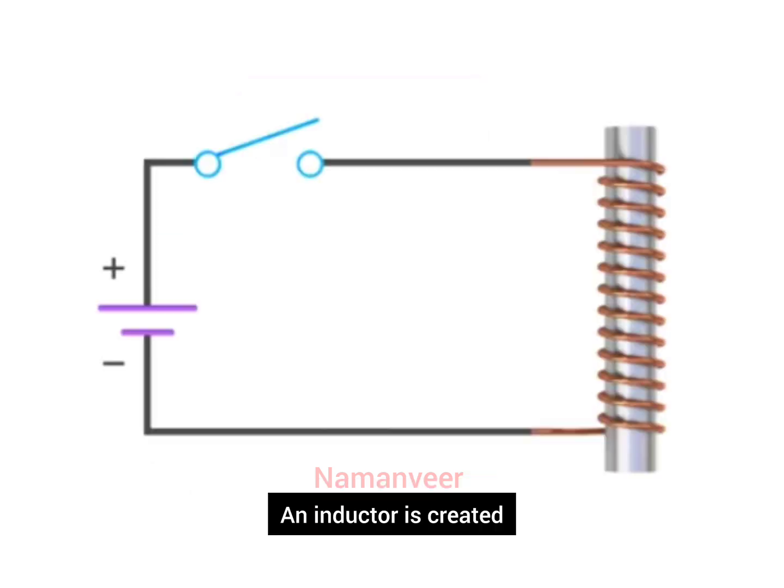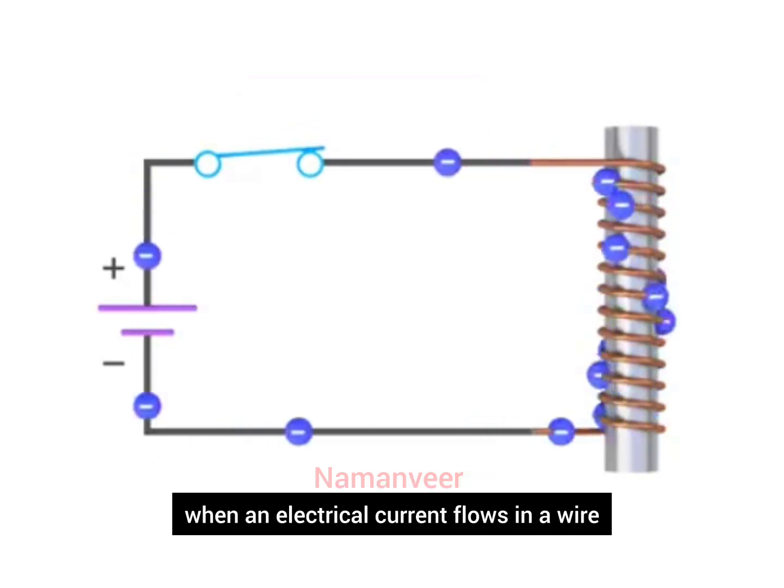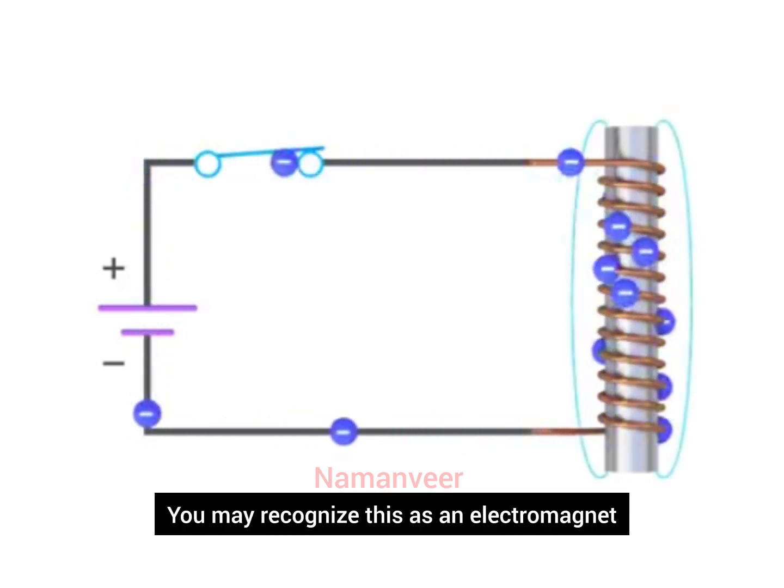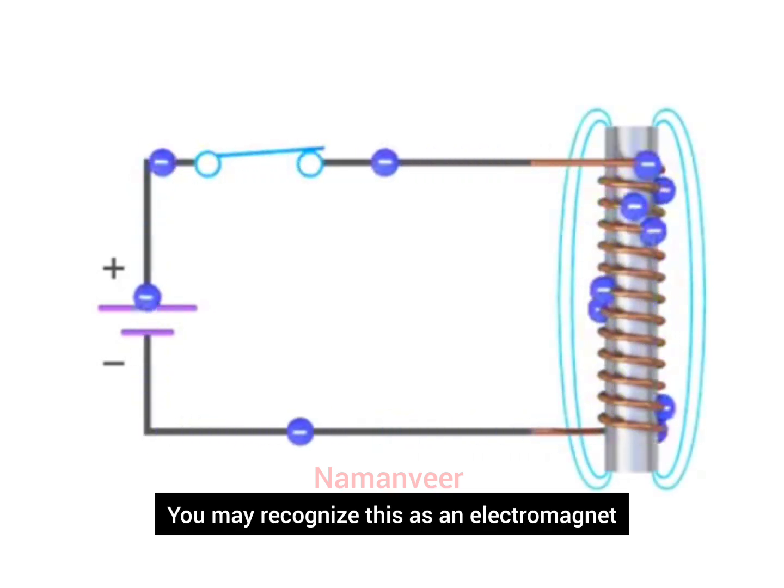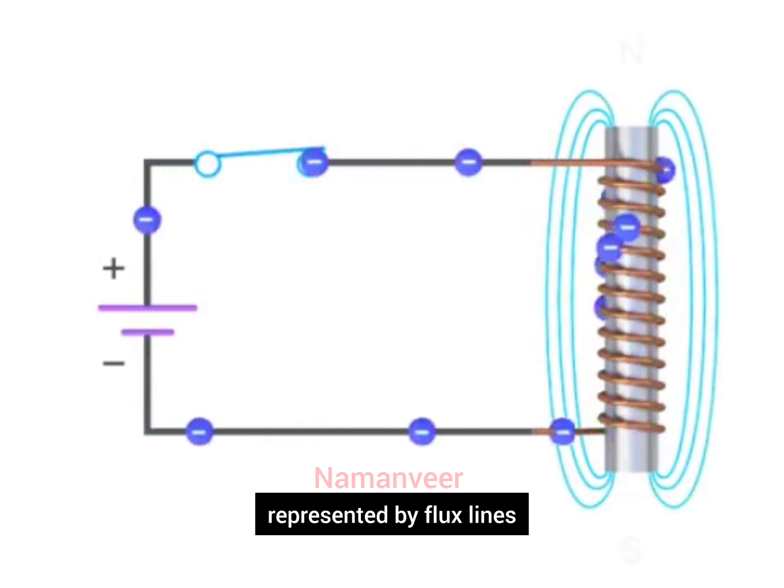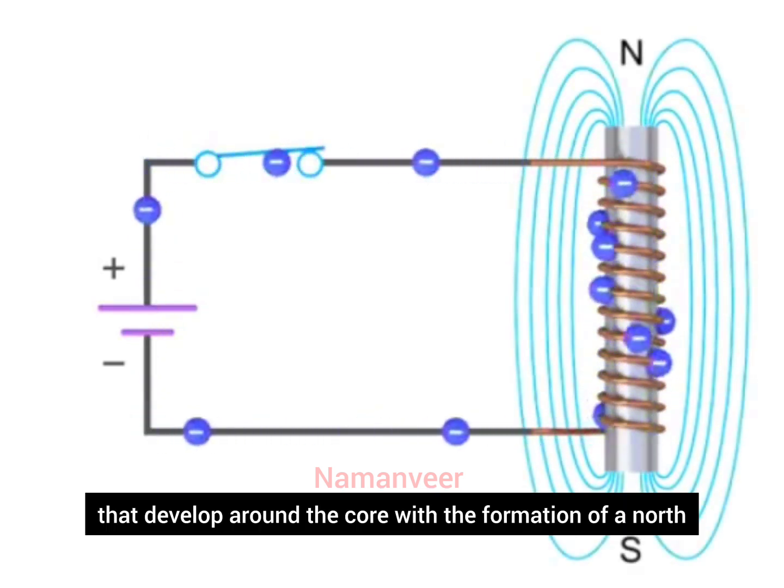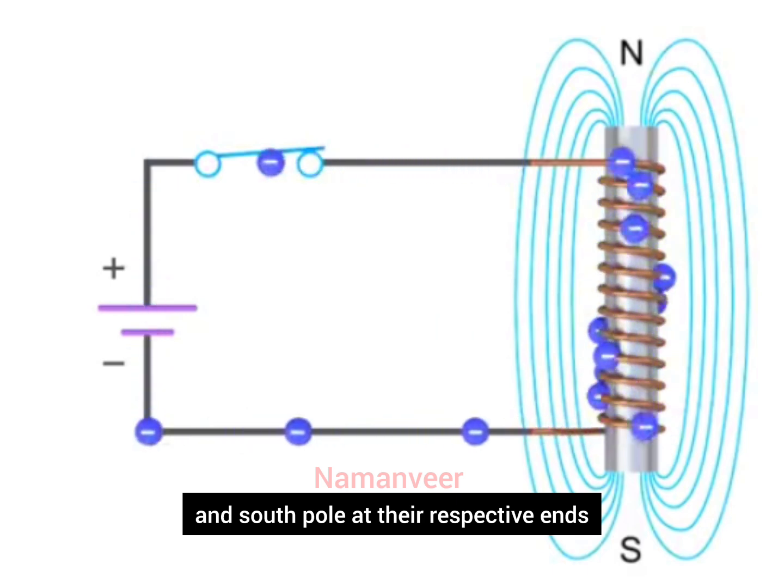An inductor is created when an electrical current flows in a wire wrapped around a magnetic core. You may recognize this as an electromagnet represented by flux lines that develop around the core with the formation of a north and south pole at their respective ends.